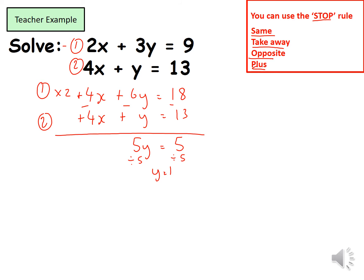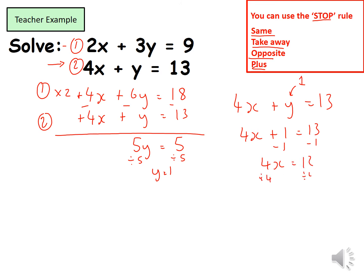I've now worked out the value of y. I need to find x, so I substitute back into one of the original equations. I'll use equation two because the y is on its own and it looks easier. Writing it out: 4x plus y equals 13. I know y equals 1, so I have 4x plus 1 equals 13. Taking 1 from both sides: 4x equals 12. Dividing both sides by 4: x equals 3.